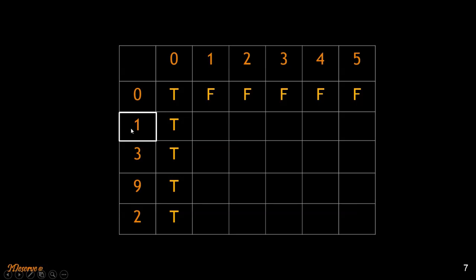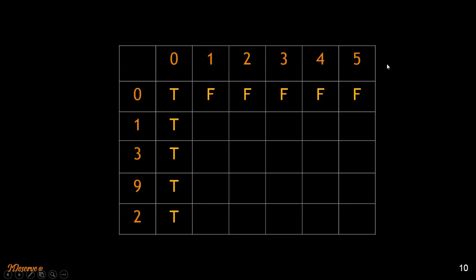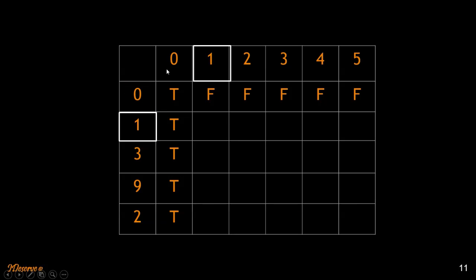Before filling the table, let me explain what we mean by walking through it. When we look at element 1, we are considering the subset {0, 1} and trying to find if any subset of it adds up to each of these target sum values. We keep adding one element at each step as we complete filling a row. When we look at 3, we are considering the set {0, 1, 3}, and so on for 9 and 2.